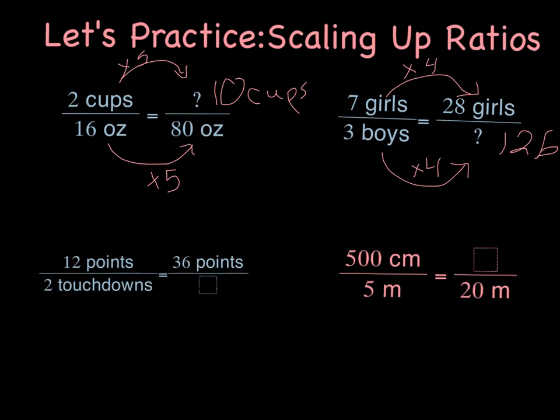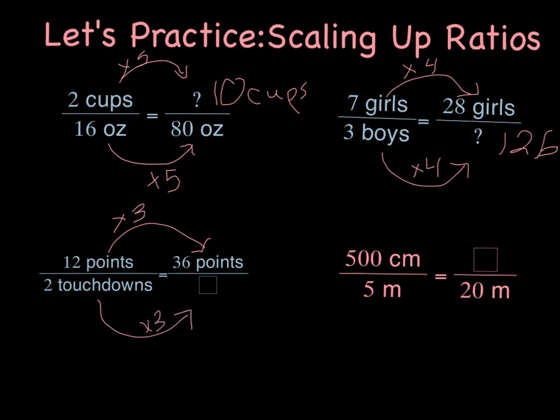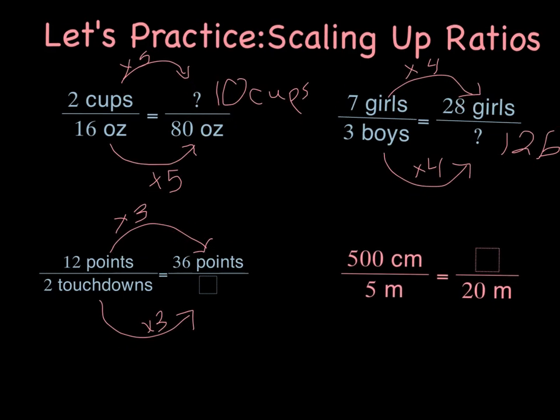The next question: I have twelve points for every two touchdowns. If I went from twelve points to thirty-six points, that is times three. So for two touchdowns, I also have to multiply by three. Two times three gives me six. So for six touchdowns, I would earn thirty-six points.